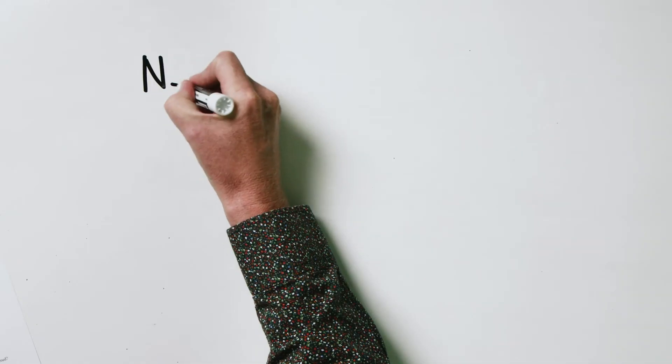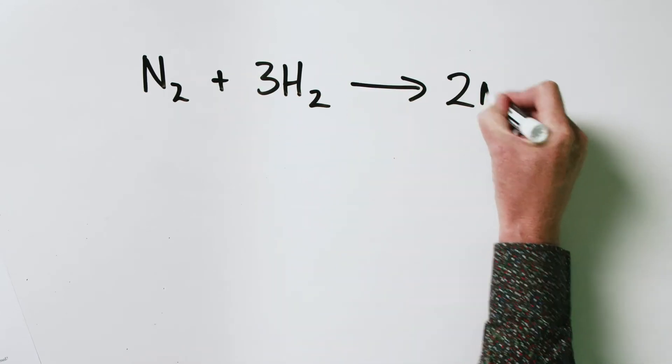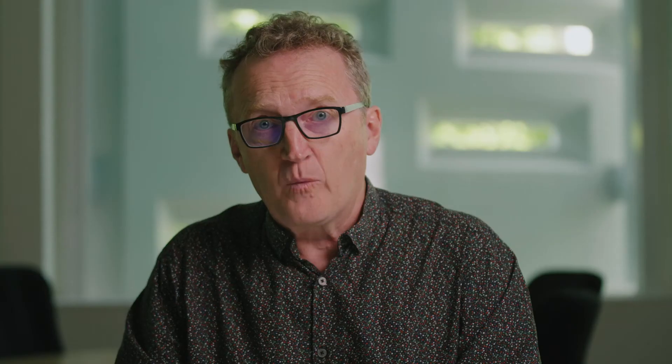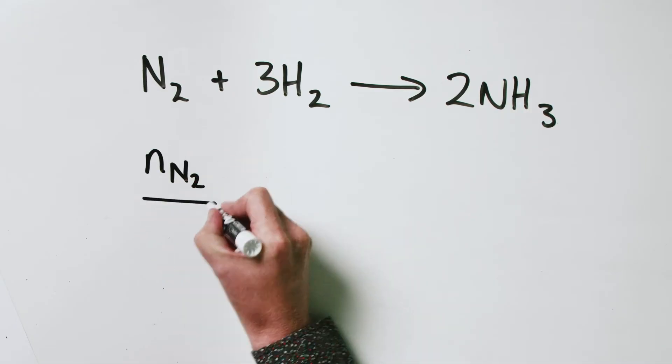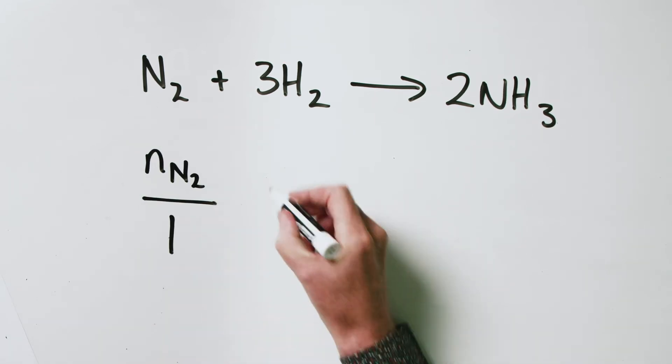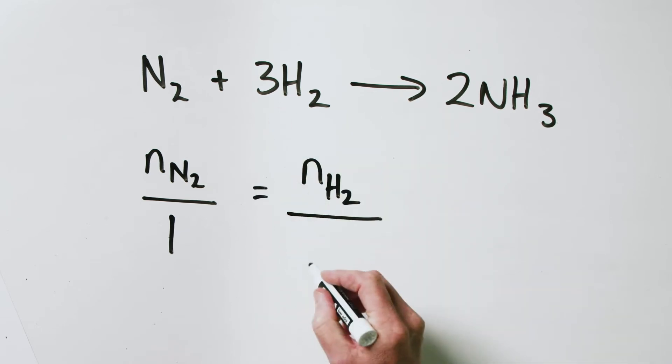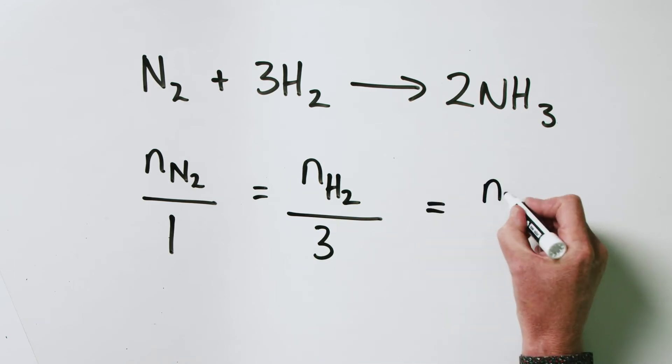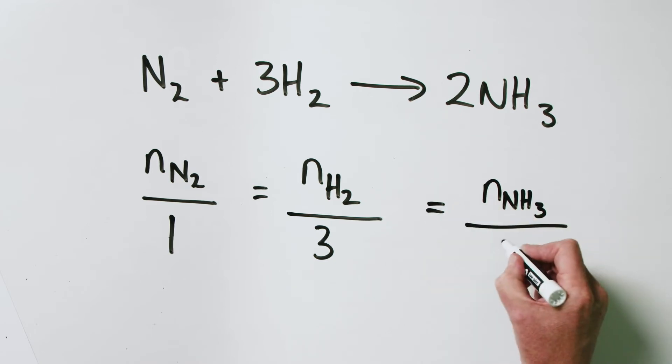Let's go back to our example: N₂ + 3H₂ → 2NH₃. We're starting with five moles of hydrogen. Applying our formula, we can say: moles of N₂ / 1 = moles of H₂ / 3 = moles of NH₃ / 2. This is true regardless of whether we're looking at reactants or products — it's always true. So we're starting with five moles of hydrogen; how much nitrogen do we need to react completely?